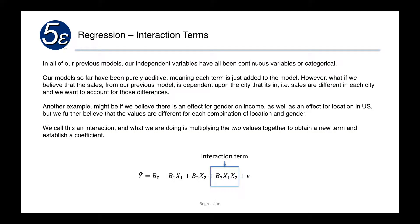In all of our previous models, our independent variables have been continuous variables or categorical, which we use dummy variables for. They've been purely additive, meaning each term is just added to the model. However, what if we believe that sales from our previous model is actually dependent on the city that it's in? Sales are different in each city and we want to account for those differences.